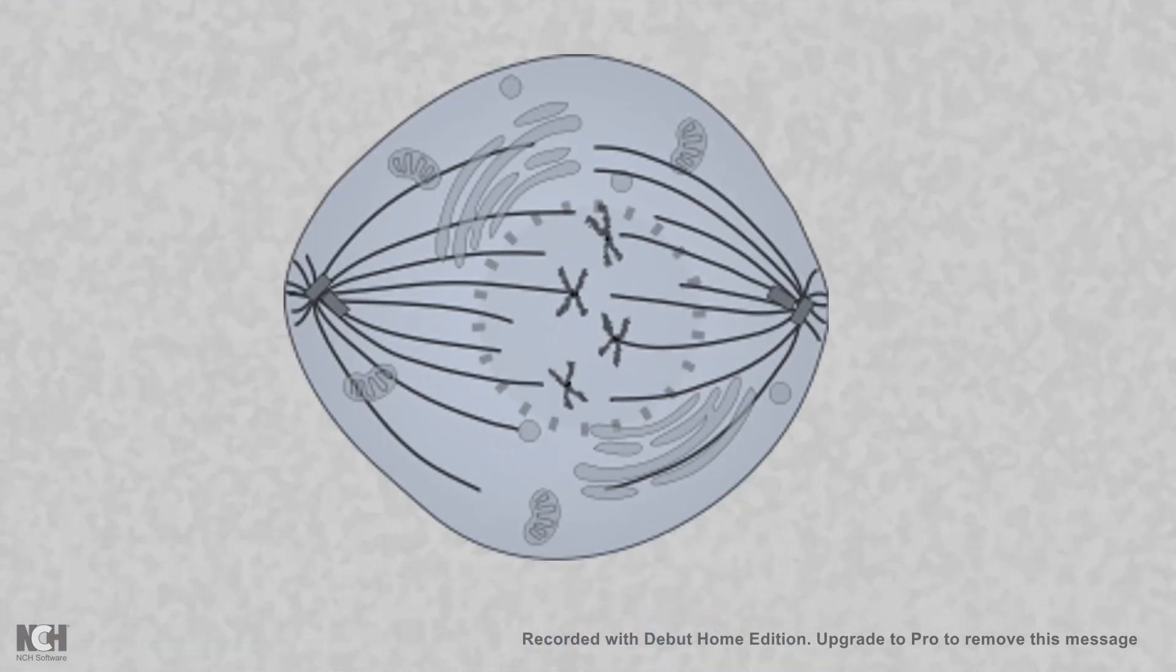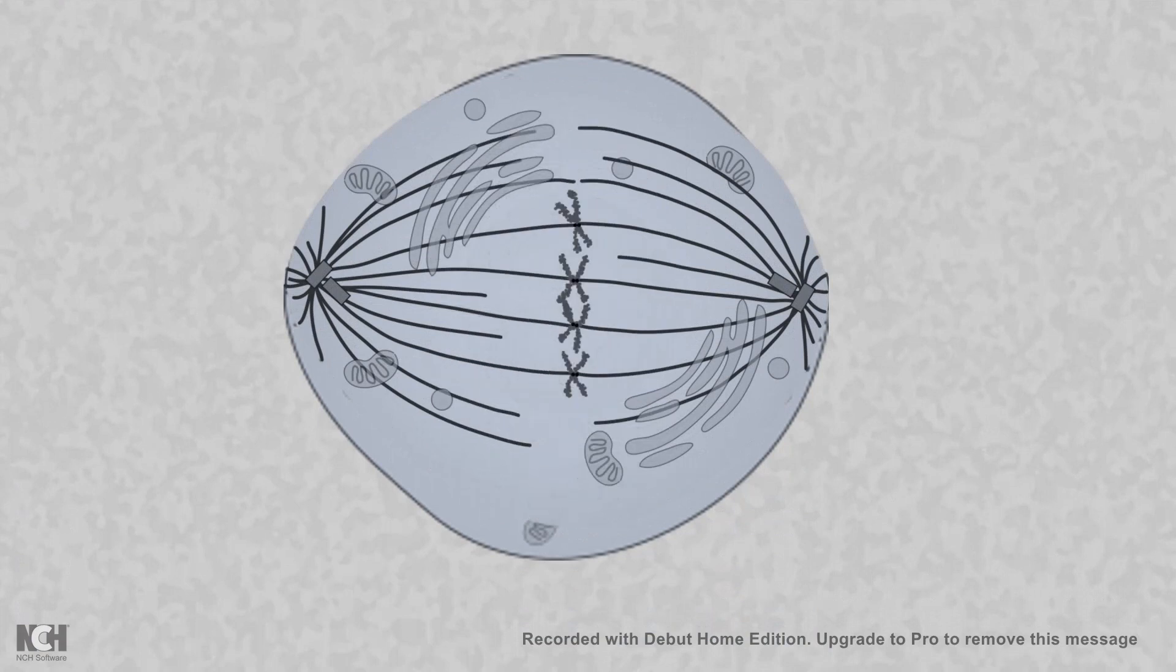When everything is proper, the chromosomes are aligned in the metaphase plate and the tension is equal from both sides.